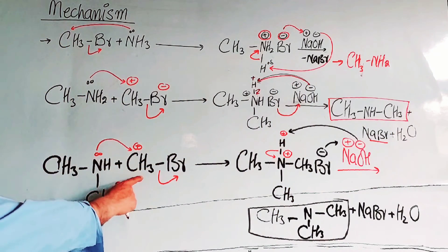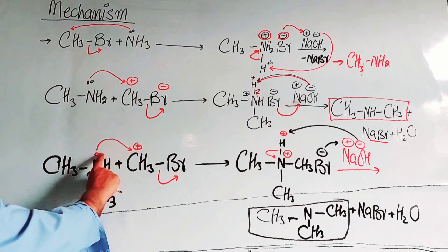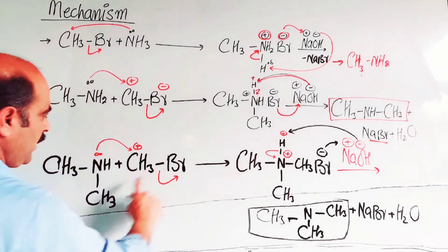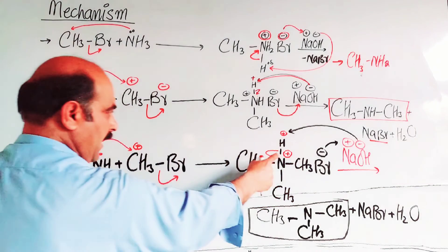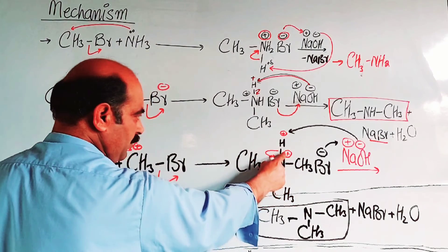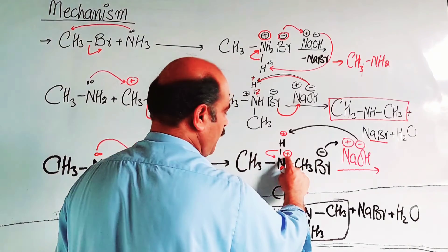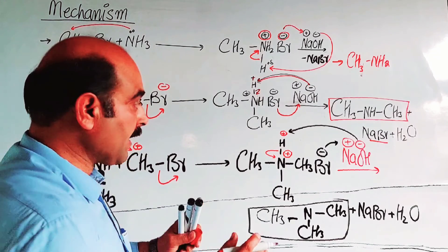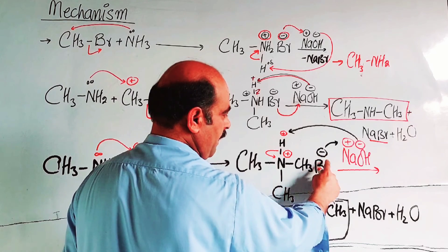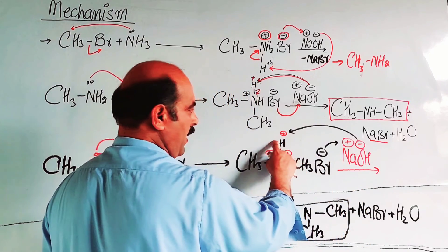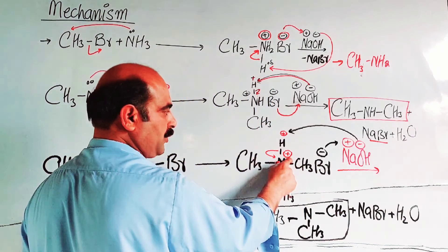The secondary amine reacts with more alkyl halide by the same mechanism a third time. CH3 attaches to nitrogen on the right side. Nitrogen still has one hydrogen; a bond forms giving a positive charge on nitrogen. Bromide ion leaves and attaches due to electrostatic force. Sodium hydroxide is added: sodium ion removes bromide ion as sodium bromide, and hydroxide ion removes the remaining hydrogen ion as water. Bonded electrons shift to nitrogen, balancing the positive charge, forming the tertiary amine (CH3)3N.